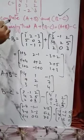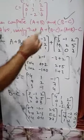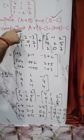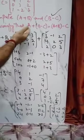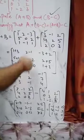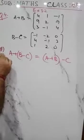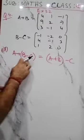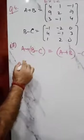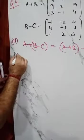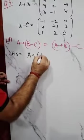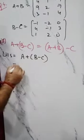So this is how we have computed A plus B and B minus C. Now for the second part, we have to verify that A plus B minus C is equal to A plus B minus C. So let us take the LHS, which is A plus B minus C.